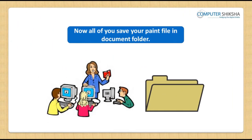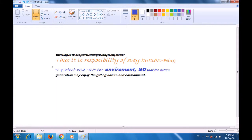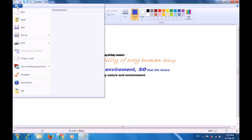Now, all of you show how you will save your paint file in the documents folder. In case of any problems in saving, watch the video and take its help. With the help of this video, we are going to practice how we can save our paint file. To save the file, you first have to take your pointer to the top left of the screen, click on the drop-down button, and click on the save option.